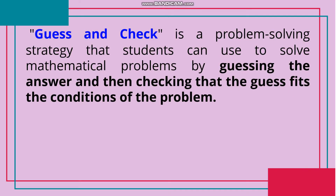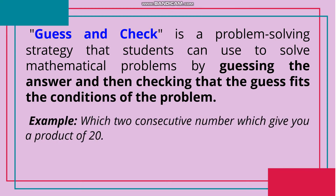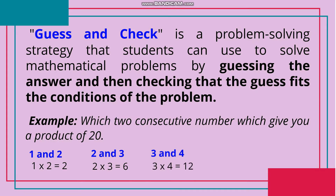Guess and Check is a problem-solving strategy that students can use to solve mathematical problems by guessing the answer and then checking that the guess fits the conditions of the problem. Example: which 2 consecutive numbers give you a product of 20? Ang dalawang condition sa problem ay 2 consecutive or dalawang magkasunod na counting number at product of 20. Applying guess and check: 1×2=2, hindi pwede; 2×3=6, hindi rin pwede; 3×4=12, hindi rin pwede; 4×5=20 — this is the correct answer: 4 and 5.